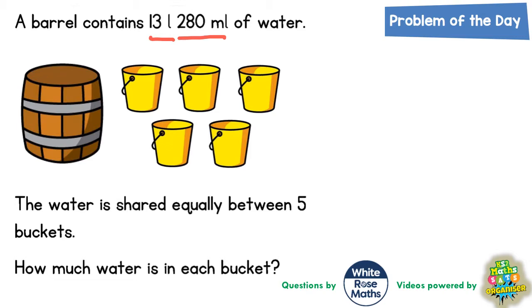Well this one's really quite simple. All we need to know is that in one litre there is 1000 millilitres. So in 13 litres there is 13,000 millilitres. But obviously we've got the extra 280. So all together we've got 13,000 plus 280. In other words 13,280.